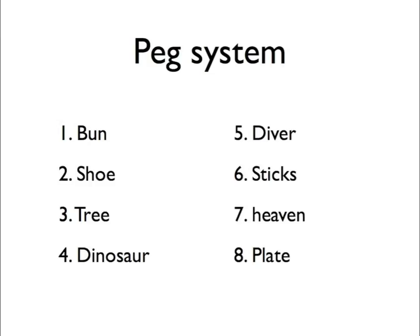For example, one is represented by a bun because they rhyme. Two, a shoe. Three, a tree. Four, a dinosaur. Five, a diver. Six, sticks. Seven, heaven. And eight, a plate. You can kind of see how the rhyming helps remember it.